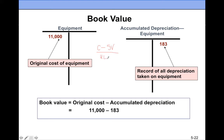Usually in this class, useful life will be expressed in months, though it could be in years. In this example, everything is given: equipment bought for $11,000, salvage value of zero, and useful life of 60 months — because they told you the equipment will be used for five years, and five years times 12 months equals 60 months. That gives us $183.